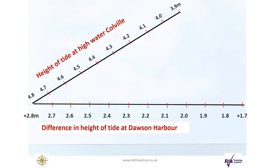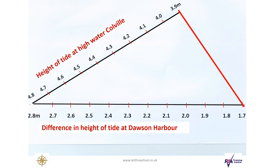On the other scale we can mark the difference in the height of tide at high water Dawson Harbour. Using the crocodile graph we have created, we draw a line connecting the 3.9 metre high water height at Colville with the difference of 1.7 metres at Dawson Harbour. When the height of high water at Colville is somewhere between the spring rate of 4.8 metres and the neap rate of 3.9 metres, we can use the crocodile graph to find the difference in the height of tide at Dawson Harbour.